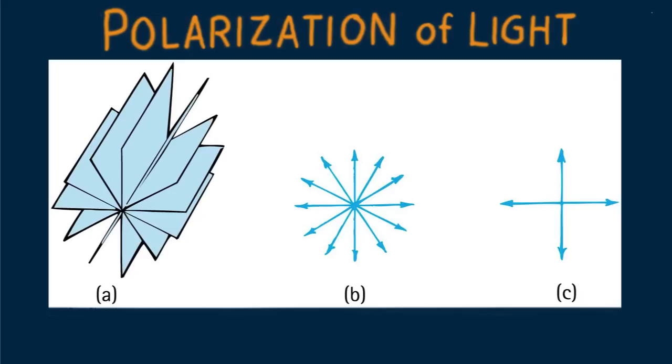The details of polarizing materials I leave to your textbook reading. For now I'll just say that a sheet of polaroid has a specific polarization axis, and is transparent only to light with electric field vibrations parallel to that axis.